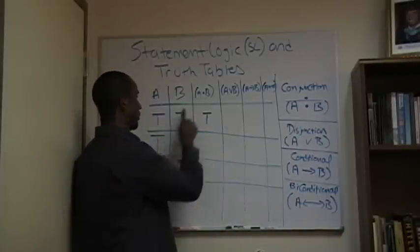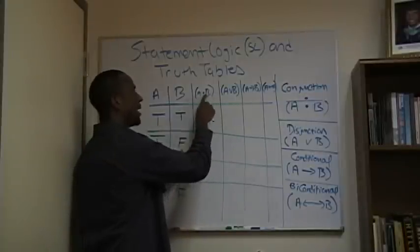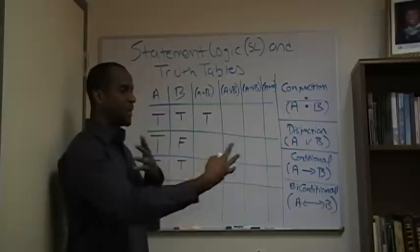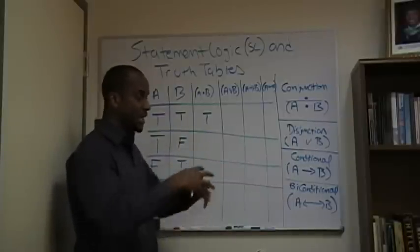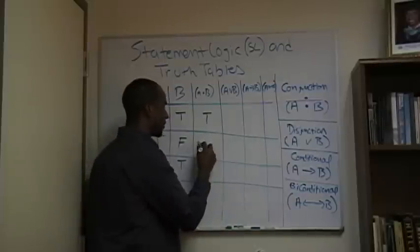If this is true and this is false, well, now I have something that's false, right? So if I'm adding falsity to my statement, my statement in a conjunction, if I'm adding it, the statement as a whole becomes false.